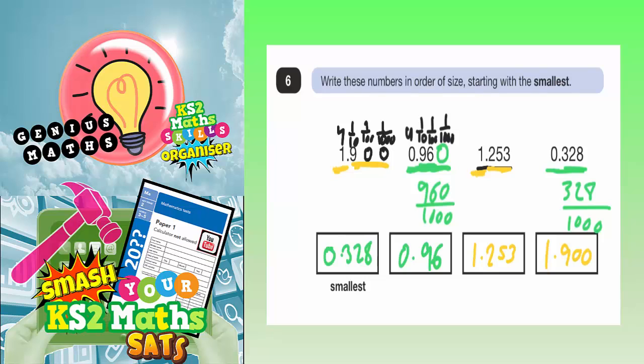So that goes in the end. So write these numbers in order of size, starting with the smallest. Your final answer is 0.328, 0.96, 1.253 and 1.900. Although you could actually get rid of those zeros off the end. You don't really need them because the original number was 1.9.